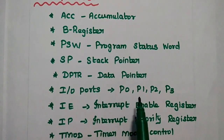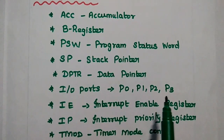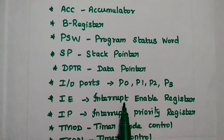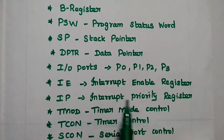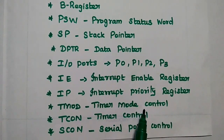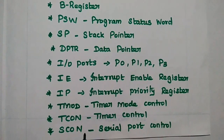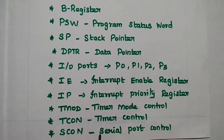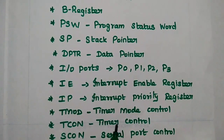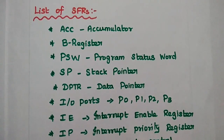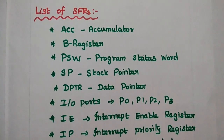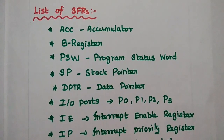The four I/O ports are P0, P1, P2, and P3. Additional SFRs include: interrupt enable register, interrupt priority register, timer mode control register, timer control register, and serial port control register. These are all the special function registers used in AT51 microcontroller.